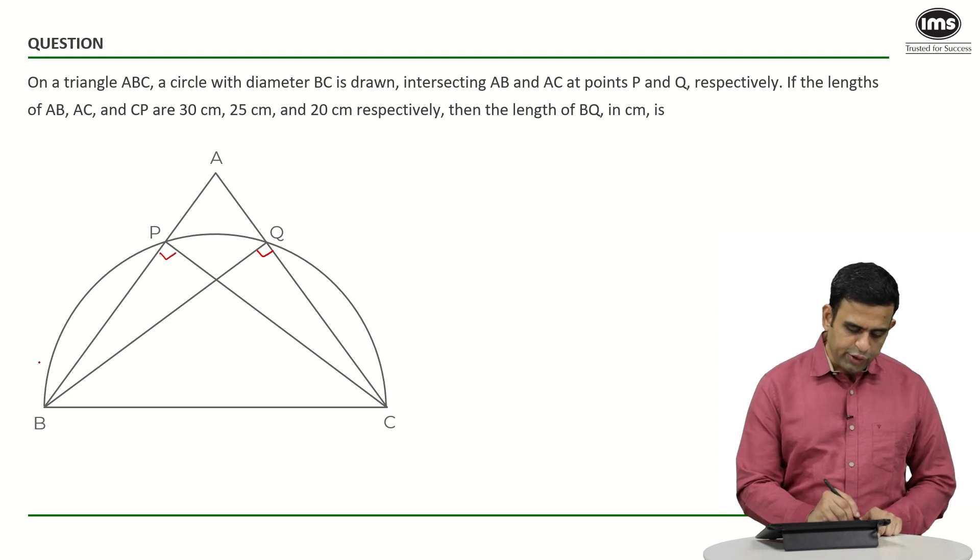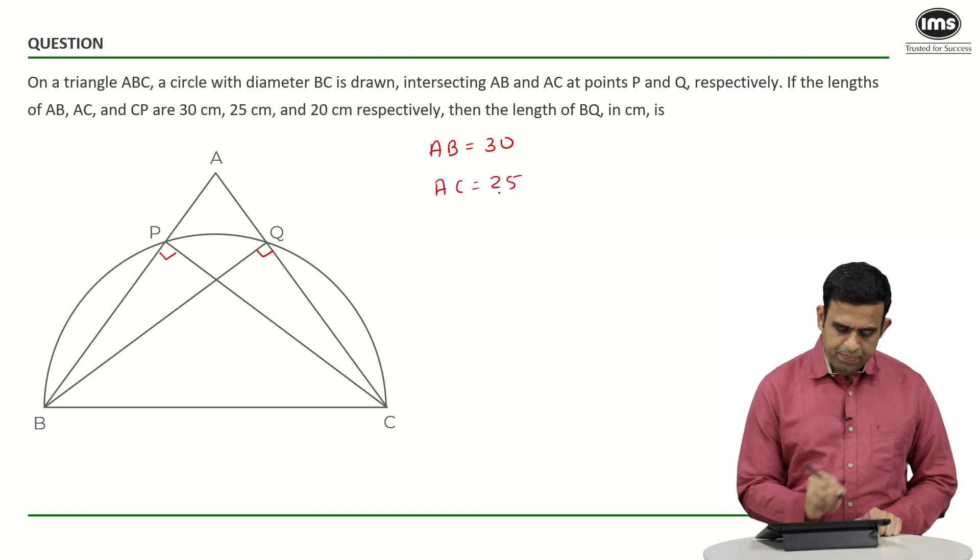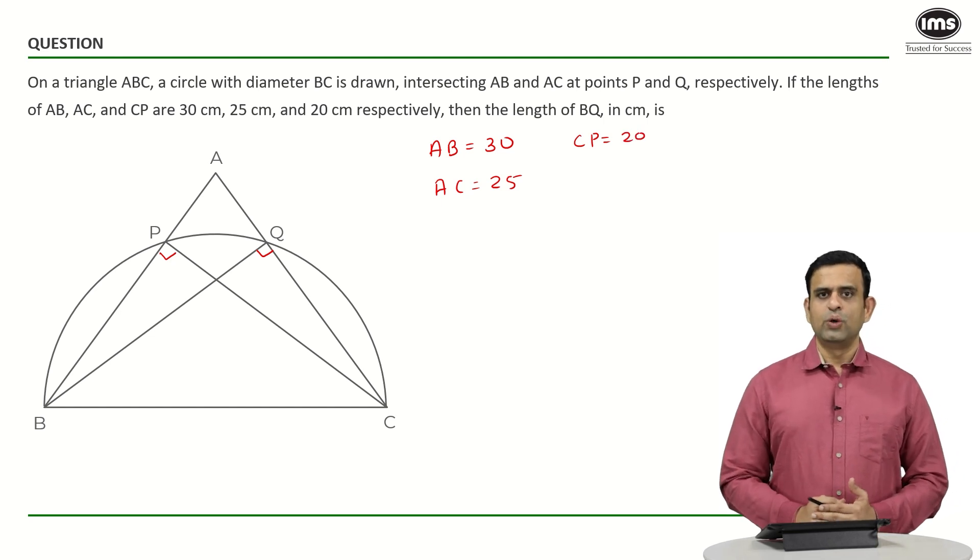Once I got that the two angles are 90 degrees, since the length of AB is given to you as 30, the length of AC is known to us as 25, and CP is given to you as 20 centimeters, can I say one thing?